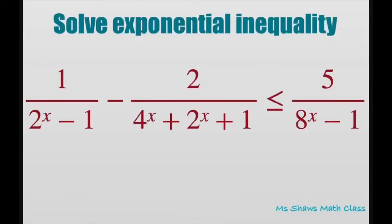Hi everyone. We're going to solve the given exponential inequality. What we have here is 2 to the power of x, 4 to the power of x, and 8 to the power of x. We don't have to do this, but it's easier if we use substitution and let 2 to the power of x equal some big X.